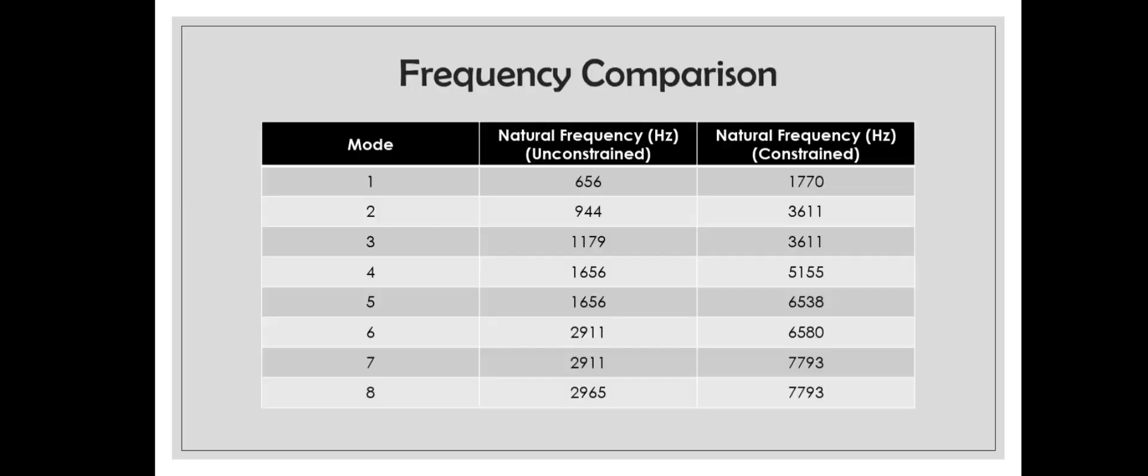Now let's compare the mode shapes of the unconstrained plate and the constrained plate. In this video, we have performed the analysis of the constrained plate, and I took the results from the previous video for the unconstrained plate. You can clearly observe that the frequencies are not the same—they're different. This does verify the theory that natural frequency does change if we add a boundary condition.